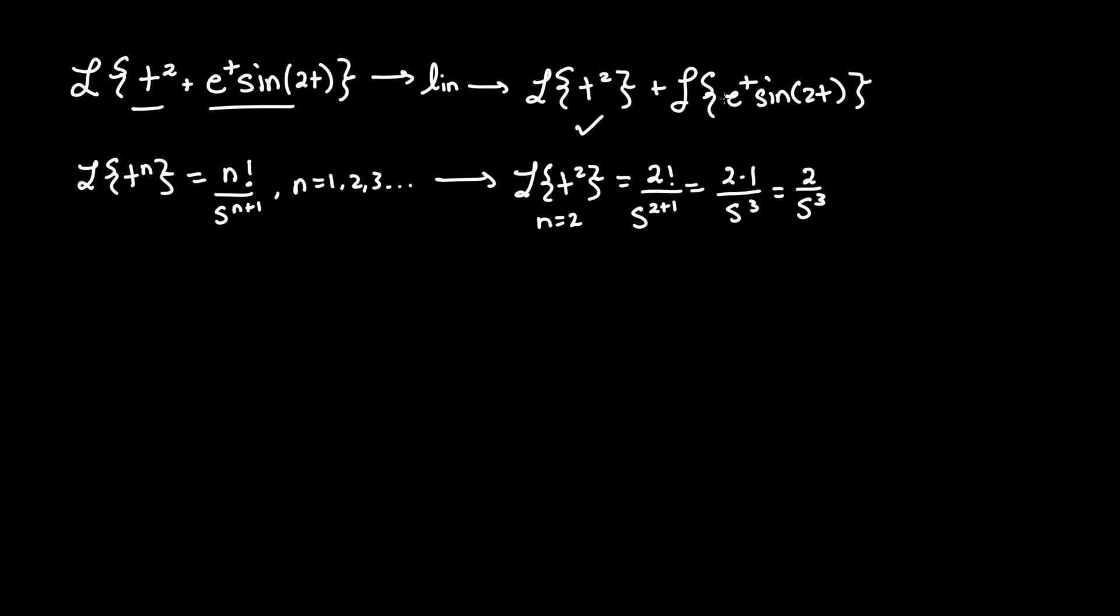Now what about this part? We're going to have to use two different properties. Let's talk about the first one. Whenever you multiply e to the something power by any given function, f of t, we'll call it, the following change occurs. Laplace of e to the at, where a is a constant, times our f of t.